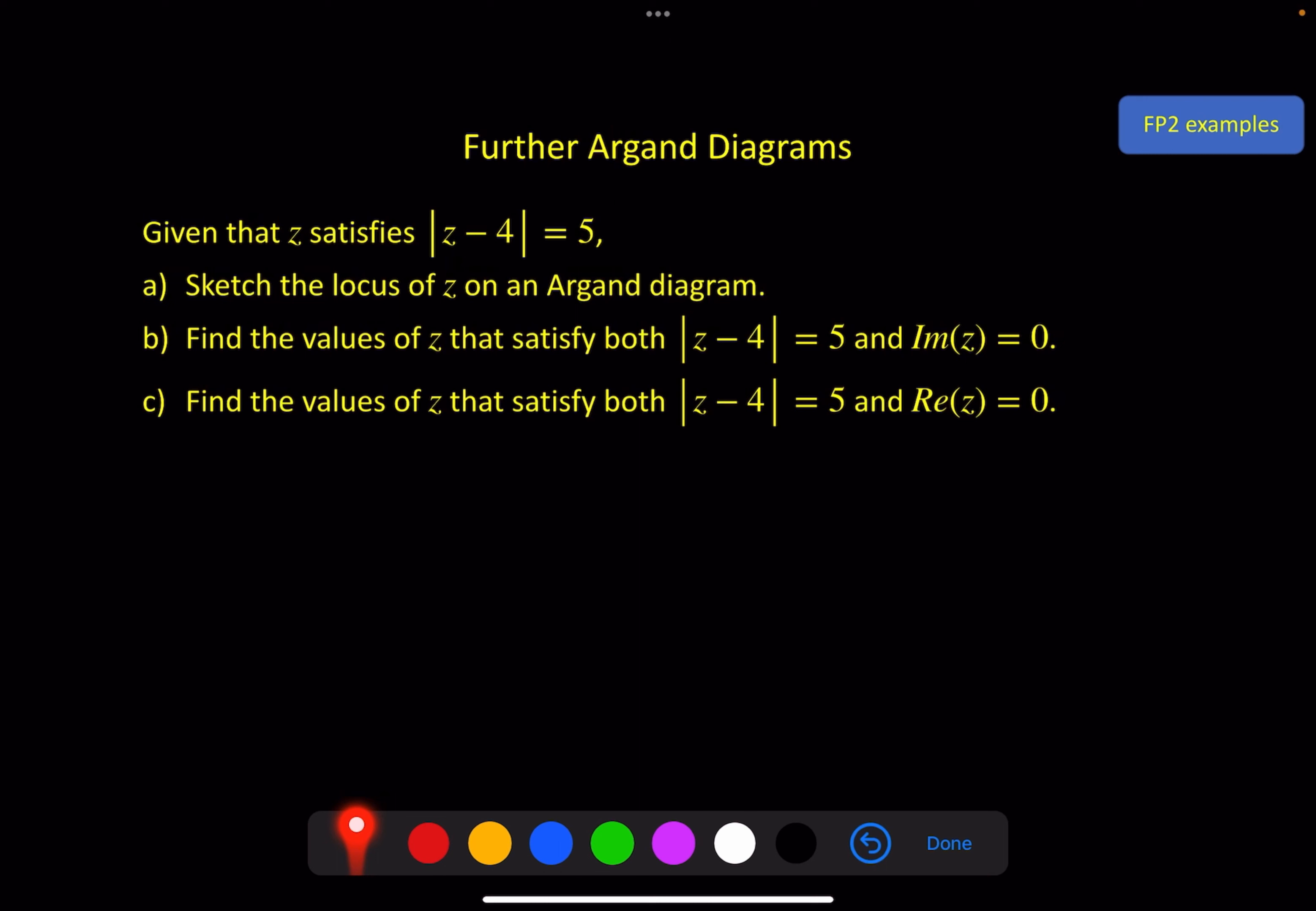First example, given that z satisfies |z - 4| = 5, sketch the locus of z on an Argand diagram. We need to be able to recognize the form. The form here is one that gives a circle, because this is saying that the distance from 4 to z is a constant 5 units. So if we have 4 on our real axis here, and the distance to z is 5 units, so on the real axis, 5 units away, I have a -1 here, and 5 units away is a 9 here.